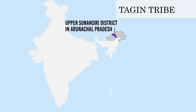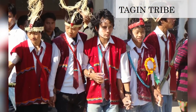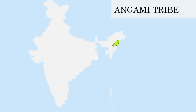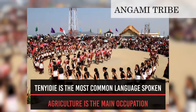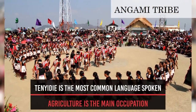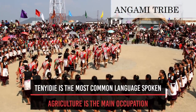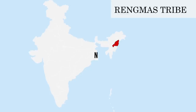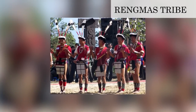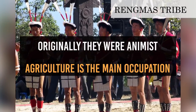Tagin Tribe: they are the main inhabitants of the Upper Subansiri district in Arunachal Pradesh. Their major occupation is agriculture. Angami Tribe: the Angamis are a major Naga ethnic group native to the state of Nagaland in North East India. Tanayadi is the most common language spoken amongst them and agriculture is the main occupation. Rengmas Tribe: they are one of the major 17 Naga tribes located in Nagaland. They follow the patriarchal system. Originally they were animist and agriculture is the main occupation.